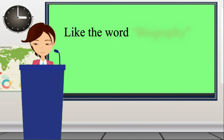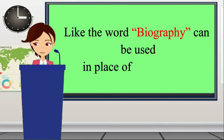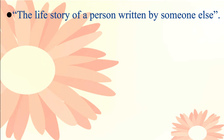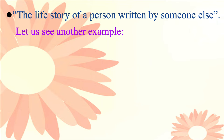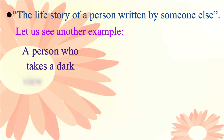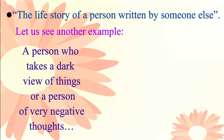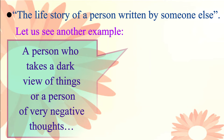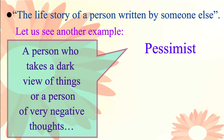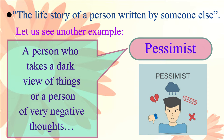Like the word biography can be used in place of the sentence: the life story of a person written by someone else. Now, let us see another example. A person who takes a dark view of things, or a person of very negative thoughts — instead of saying this full sentence, we can simply say pessimist. It describes the state of mind of someone who always expects the worst.